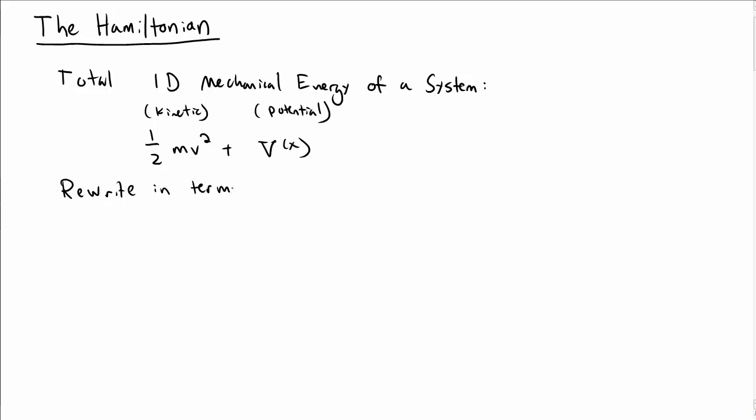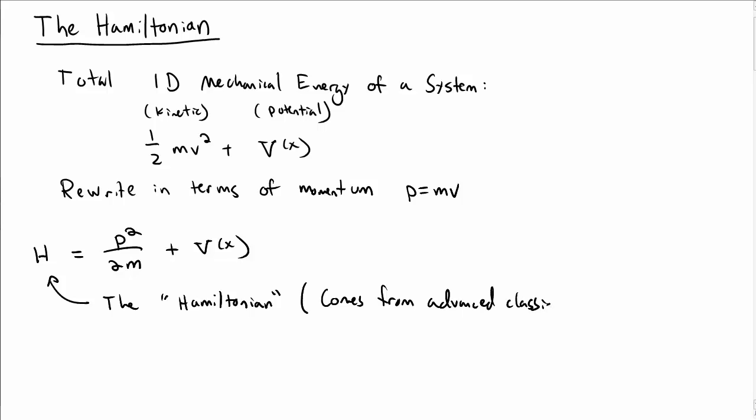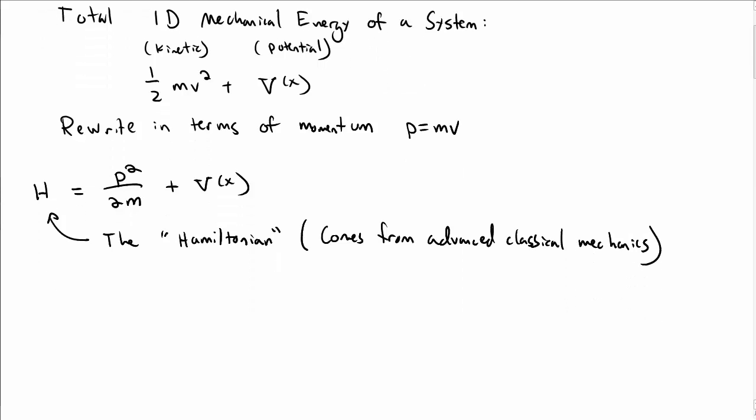It's useful to rewrite this in terms of the momentum, where the momentum is m times v, so that this would be p squared over 2m plus v of x. This is commonly called the Hamiltonian. The term Hamiltonian comes from topics in advanced classical mechanics. We're not going to go into the details here, we're just going to borrow the name.